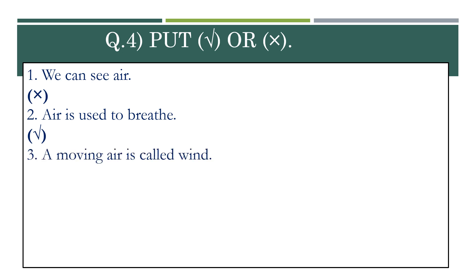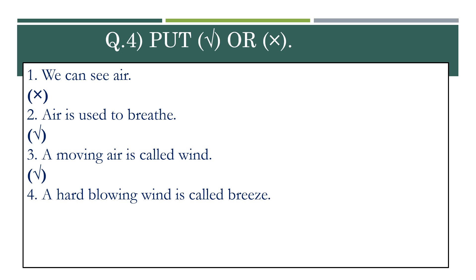Number 3: A moving air is called wind. We have seen this in the fill in the blanks and in the question answer also. A moving air is called wind — this is true, so tick mark. Number 4: A hard blowing wind is called breeze. This is false — gently blowing wind is called breeze. A hard blowing wind is called storm or strong wind. So, here we will write cross.